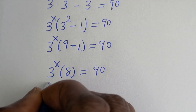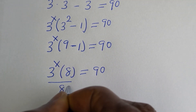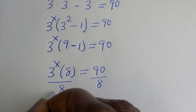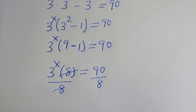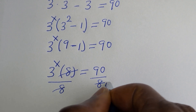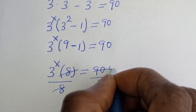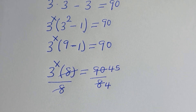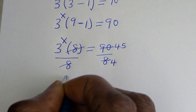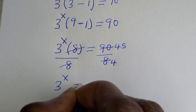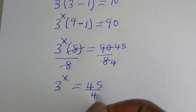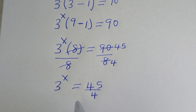Then this is 3 raised to power S, bracket 9 minus 1, that is 8, is equal to 90. Now let us divide both sides of this equation by 8. This 8 cancels, and we get 3 raised to power S is equal to 45 over 4.